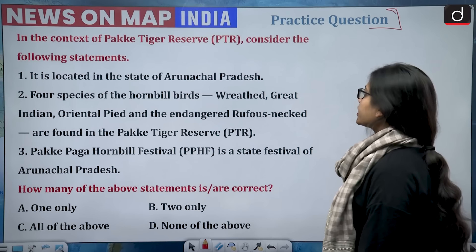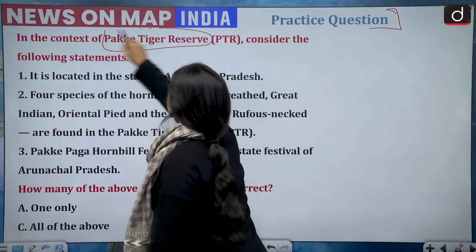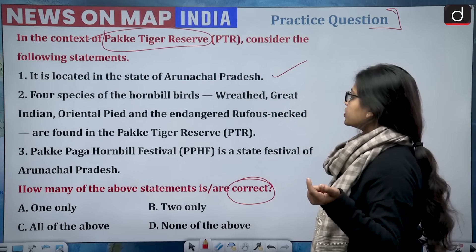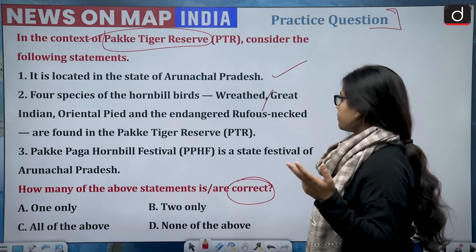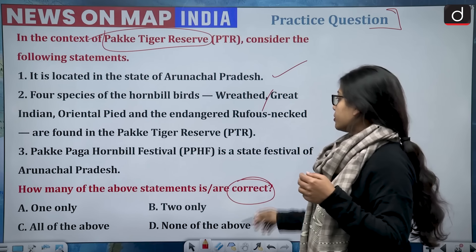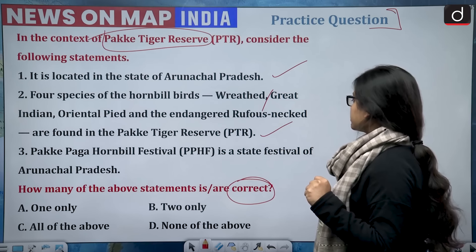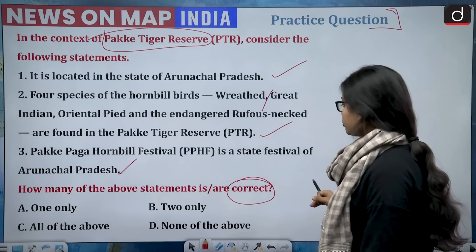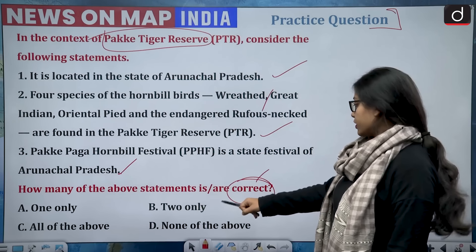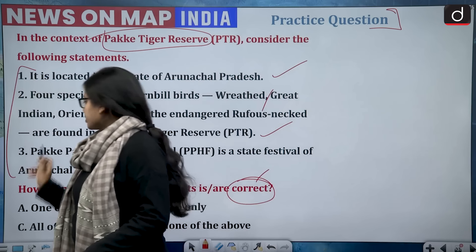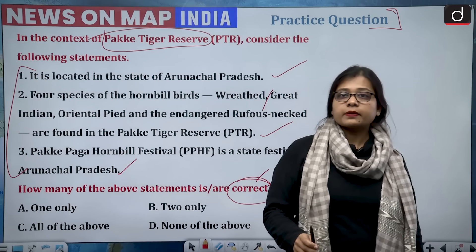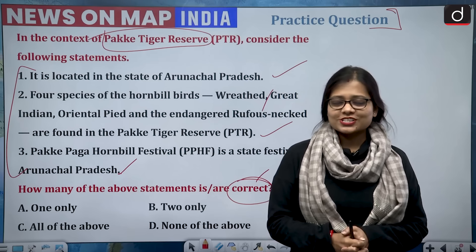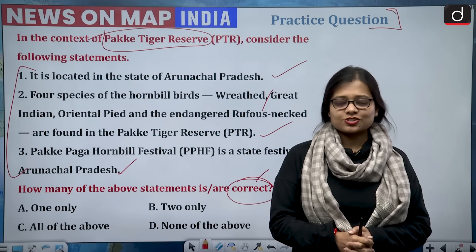Now for the practice question: in the context of Pakke Tiger Reserve, consider three statements. First, it is located in Arunachal Pradesh. Second, four species of hornbill — Blyth's, Great Indian, Oriental Pied, and the endangered Rufous-necked — are found in the Pakke Tiger Reserve. Third, the Pakke-Paga Hornbill Festival is a state festival of Arunachal Pradesh. Read the statements, look at the map, and give your answers in the comment section. Thank you for watching — keep reading, keep writing, and keep subscribing to the Drishti IAS channel.